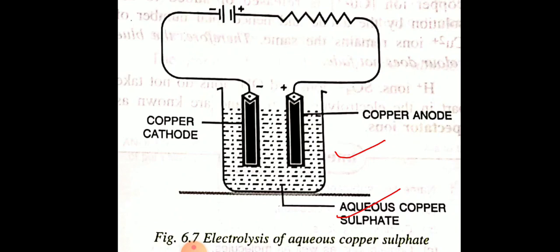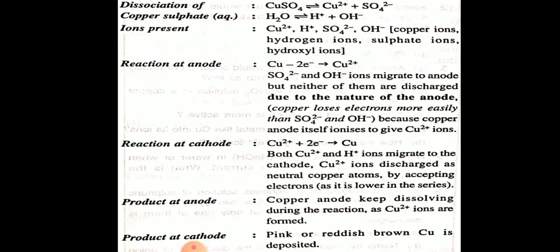The copper ions produced in the solution deposit at the copper cathode by gaining electrons. At the same time, the copper anode loses electrons and converts into copper ions. This maintains the blue color of the aqueous copper sulfate solution — as copper ions deposit at the cathode, the copper anode dissolves and replenishes them. The anode keeps dissolving during the reaction while copper deposits at the cathode.